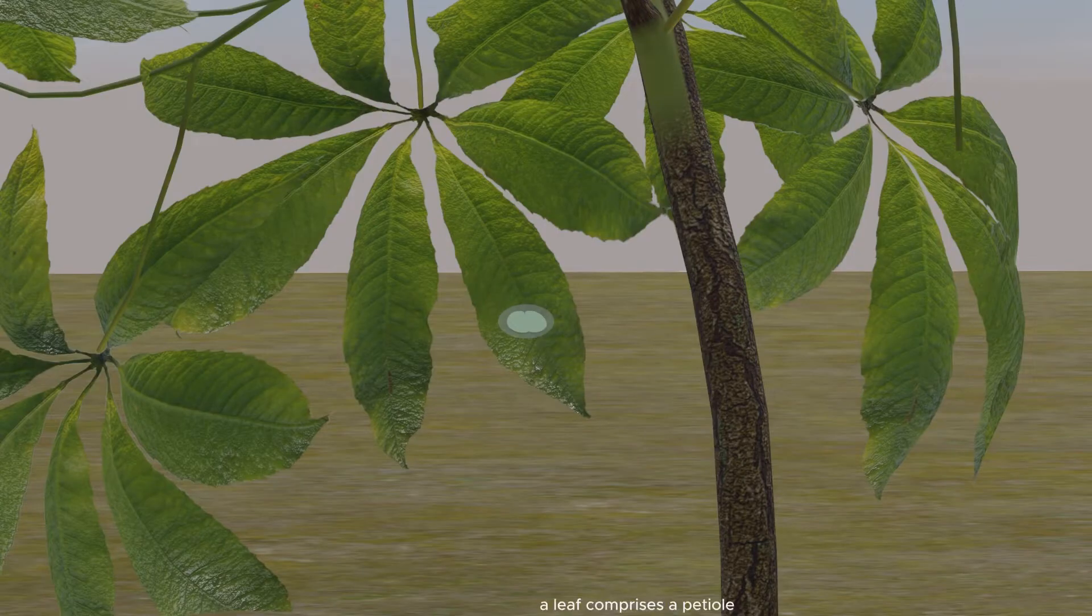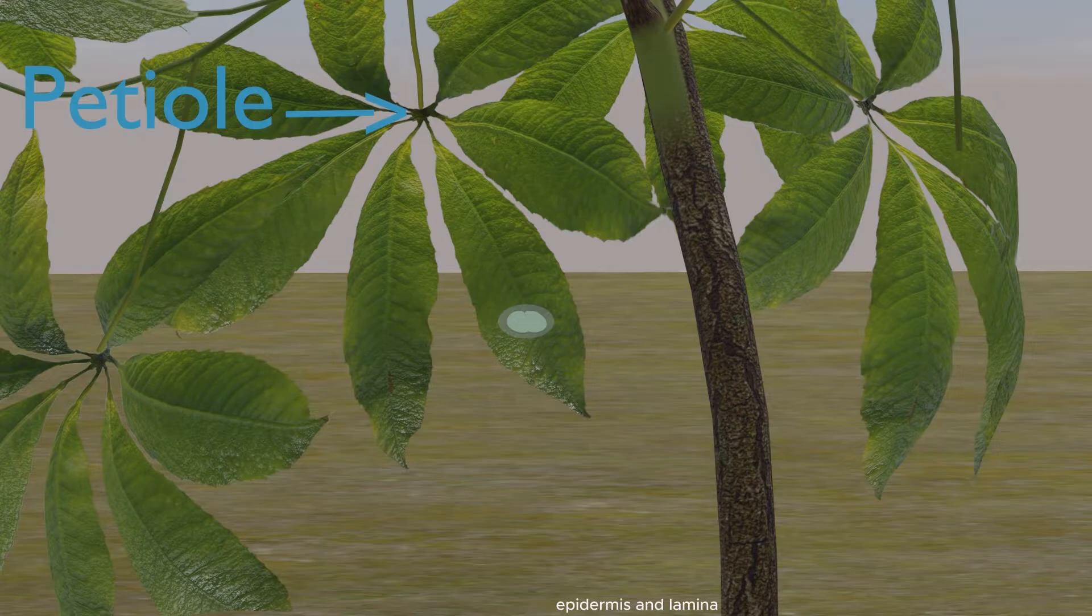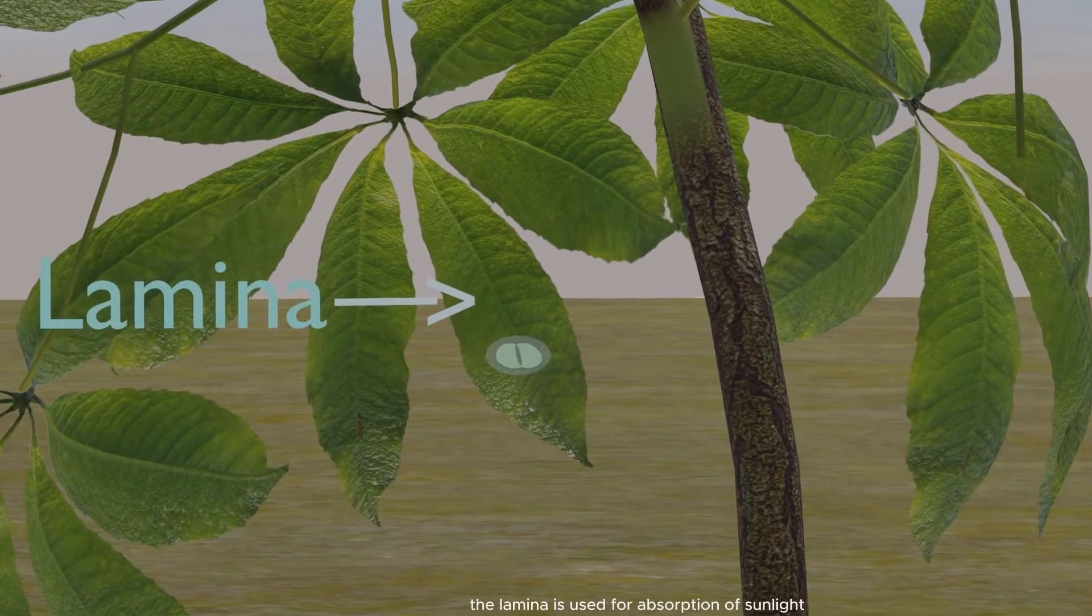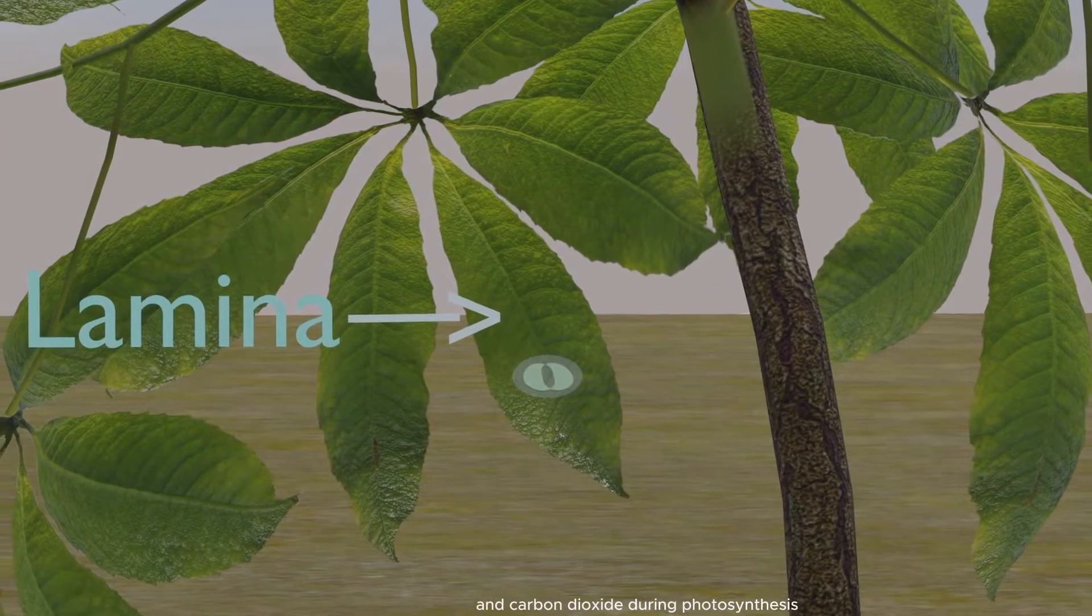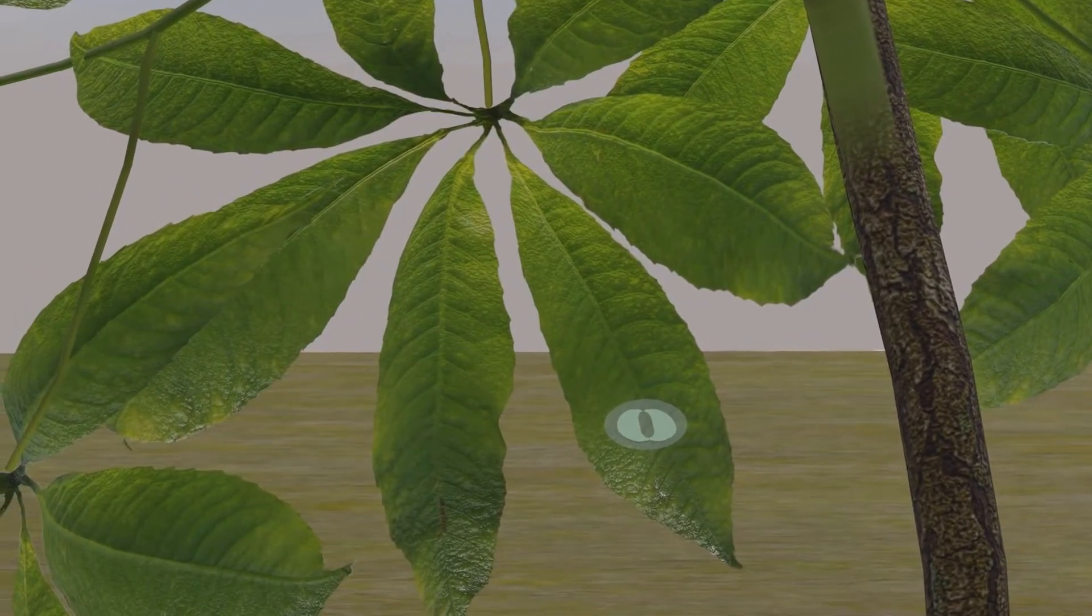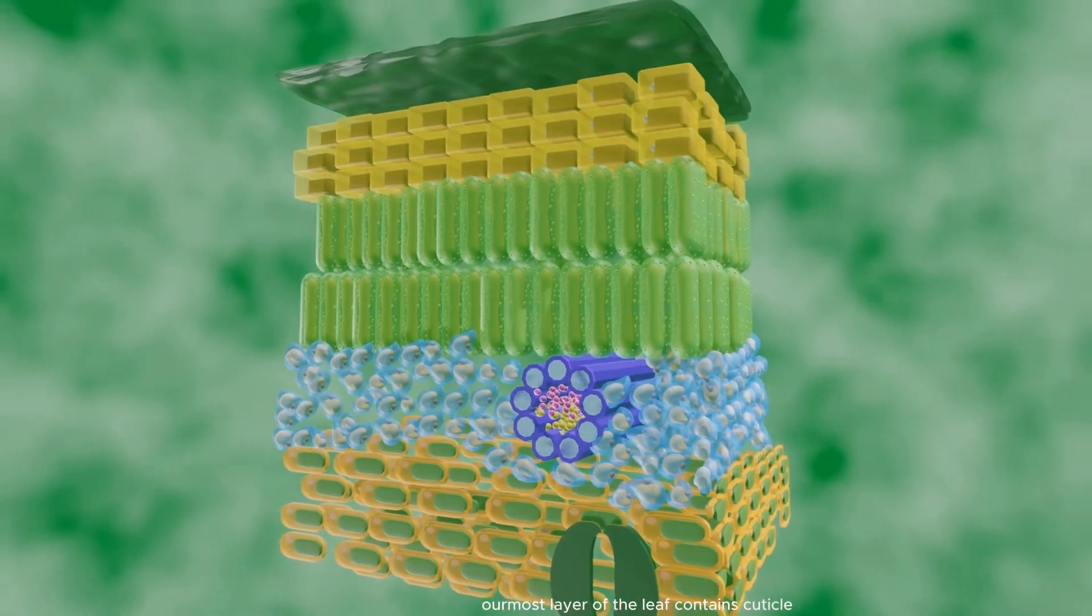Structurally, a leaf comprises a petiole, epidermis, and a lamina. The lamina is used for absorption of sunlight and carbon dioxide during photosynthesis. The outermost layer of the leaf contains cuticle.